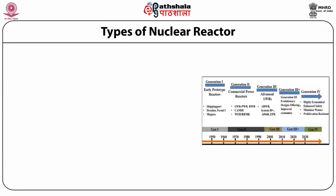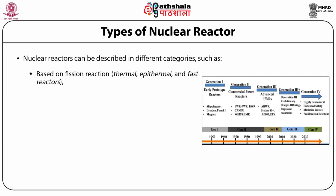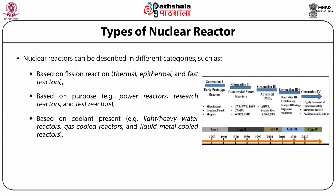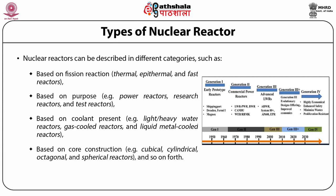Nuclear reactors can be described in different categories: (1) based on fission reaction — thermal, epithermal, and fast reactors; (2) based on purpose — for example, power reactors, research reactors, and test reactors; (3) based on coolant present — for example, light/heavy water reactors, gas-cooled reactors, and liquid metal-cooled reactors; and lastly, (4) based on core construction — for example, cubical, cylindrical, octagonal, and spherical reactors, and so on.